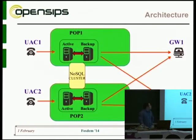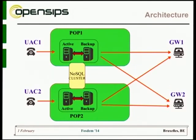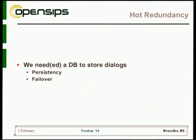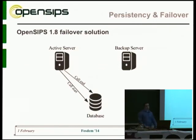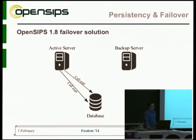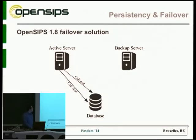When the active machine goes down, we'd like to switch as fast as possible to the backup. How things worked before: we were using a regular database for storing dialogues for persistency and failover reasons. Typically you had an active and backup pair sharing a floating virtual IP. The active server processing traffic would always keep the database in sync with its internal memory — when a call started, it would write that call record to the database, and when it ended, it would remove it.